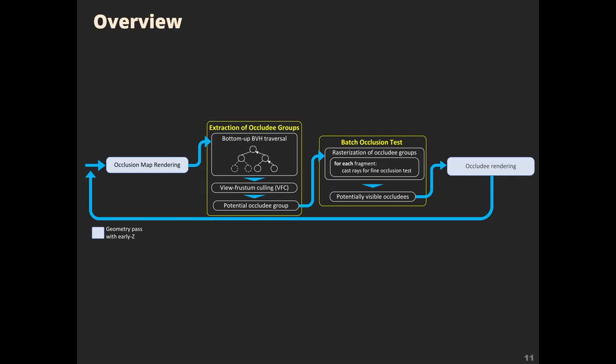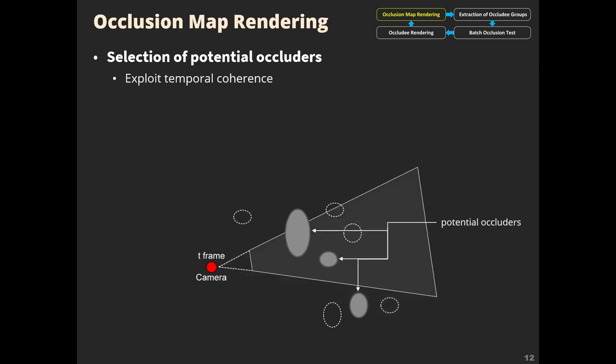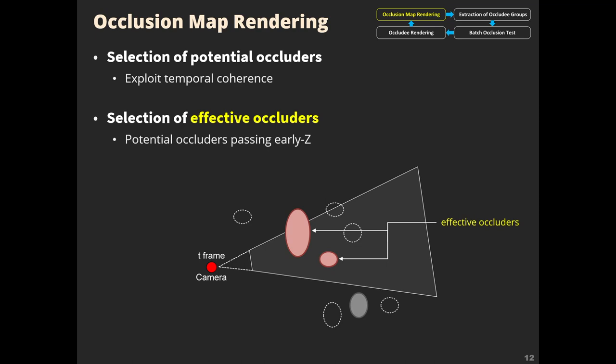This is an overview of our algorithm. It consists of four stages; the key stages are extraction of occluded groups and batch occlusion tests. The first stage is occlusion map rendering. It selects the potential occluders with temporal coherence and renders them with early Z to select effective occluders. The depth buffers are then used as occlusion maps in the occlusion test stage.